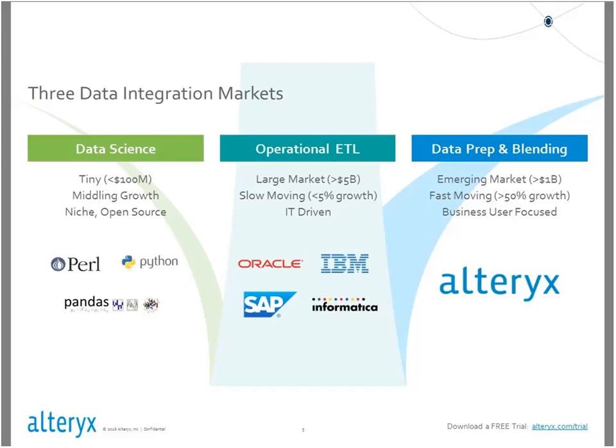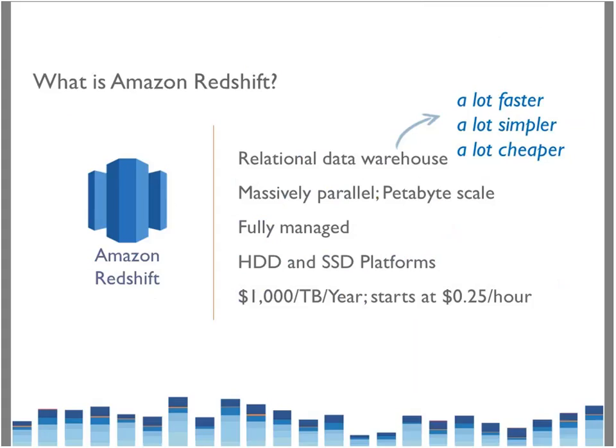I'd like to talk a little bit about Amazon Redshift. Redshift is our fast, fully managed, petabyte-scale data warehouse service. It makes it simple and cost-effective to analyze all of your data, and it can plug right into your existing business intelligence tools. Redshift is optimized for data sets ranging from a few hundred gigabytes to a petabyte or more, and it's priced at less than $1,000 per terabyte per year — about a tenth of the cost of most traditional data warehousing solutions.